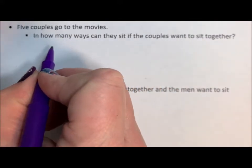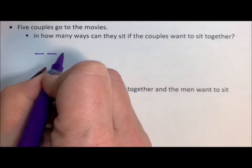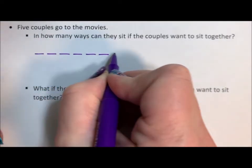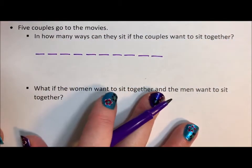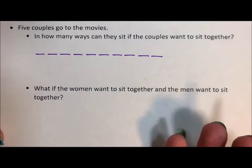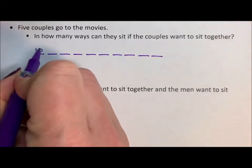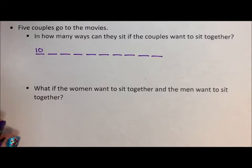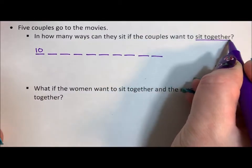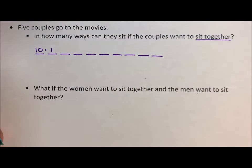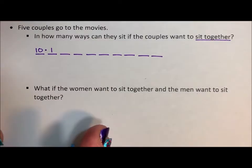If five couples are going to the movies, they are taking up 10 seats — 1, 2, 3, 4, 5, 6, 7, 8, 9, 10. So they walk in as a big group, and the first person sits down. We have 10 options — 10 possibilities. That's our first decision point. One of 10 is going to sit in that first seat, but they want to sit together, so there's really one choice for that second seat because whoever sits down first, the person they came with is going to sit next to them.